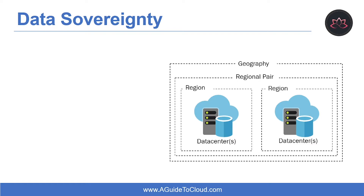In Azure, customer data might be replicated within a selected geographic area for enhanced data durability in case of a major data center disaster, and in some cases will not be replicated outside of it. Azure operates in multiple geographies around the world. An Azure geography is a defined area containing at least one Azure region, and each Azure region contains one or more data centers.